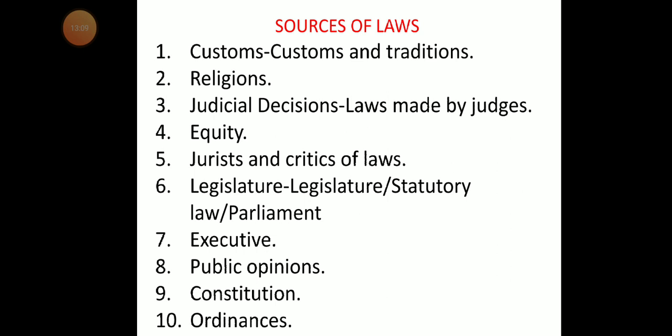Sources of law: Number one is customs and traditions — customs prevalent in society are a source of law; they evolve over time. Number two is religion — all religions of the world have rules and regulations that influence daily life, such as the law of the Quran. Number three is judicial decisions — verdicts made by judges create certain laws and play an important role in future court decisions.